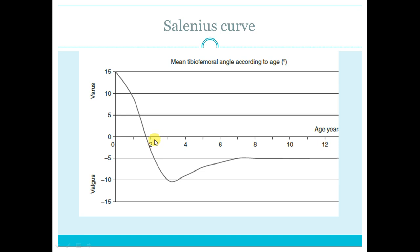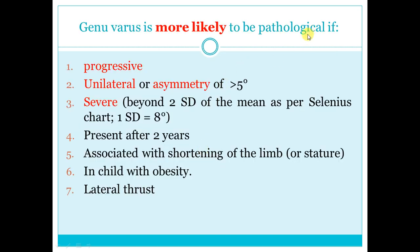Except if a trend is established — this is a cornerstone keyword in our lecture. You have to establish the trend: is it progressive deformity or regressive? So you have to establish the trend on the Salenius curve. He is more likely to be pathological if progressive — his mother says it is progressive, your clinical exam shows it is progressive — or if unilateral, or if bilateral with asymmetry.